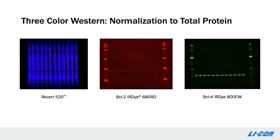This slide shows an example of a three-color western blot, with each channel shown separately. Normalization is done with REVERT-520, and two targets, BCL-2 and BCL-XL, are detected in the 700 and 800 channels. Normalizing to REVERT-520 provides confidence that any changes in BCL-2 or BCL-XL are due to changes based on sample treatment, not to experimental variability.